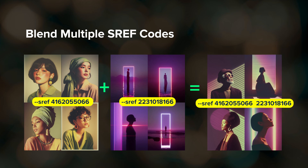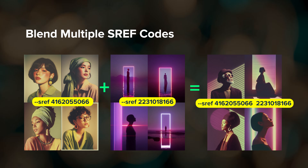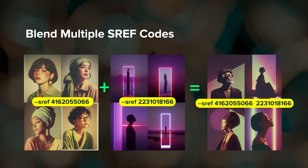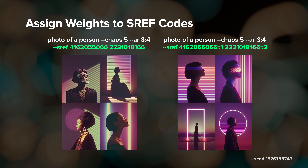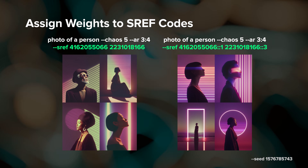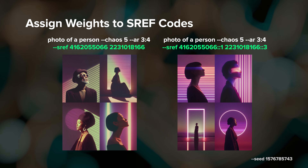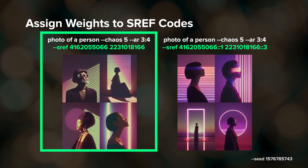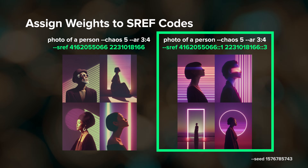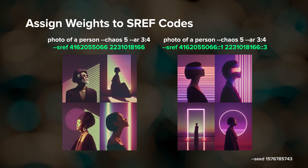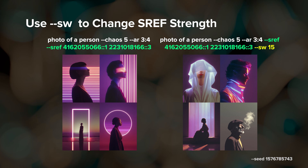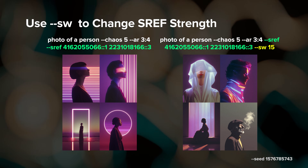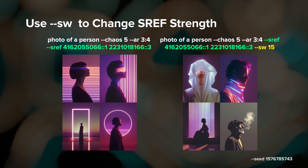One more thing about sref codes: you can blend multiple sref codes together to create a completely new style — just separate each sref code with a space. You can also assign weights to each sref code if you want one to have more influence than the others by placing two colons and a number after the sref code. For example, these two sref codes are being weighted equally in this prompt, but here the second sref code has three times as much influence as the other. And remember you can use the style weight parameter --sw to increase or decrease the strength of that sref code or the overall sref blend on your results.